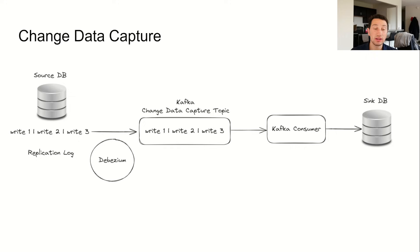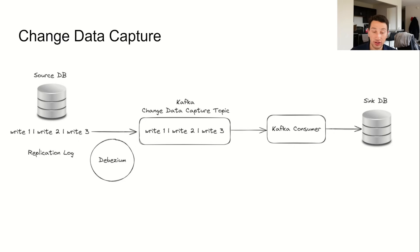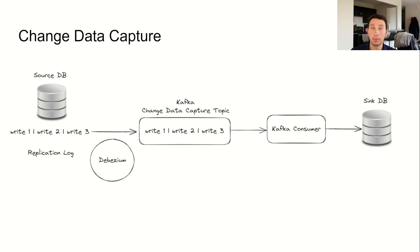We can accomplish this with something known as change data capture. CDC, as it's called for short, hooks into the replication log of a database and syncs it to Kafka. One tool that allows you to do this with a wide variety of databases is called Debezium. Since the replication log is itself durable and messages in Kafka are durable when configured properly, we know that even if database failures are present, we should expect to eventually see them in Kafka. From there, we can have a Kafka consumer that takes in those messages and syncs them to the post likes count table.